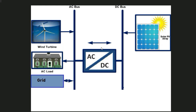Our first priority will be to meet the load demand through renewable energy sources — wind turbine and solar system. In case the renewable energy is not sufficient, energy will be taken from the grid. On the other hand, if there is excess energy available during the day or excess wind energy at night, that energy after meeting the load demand will be sold to the grid.